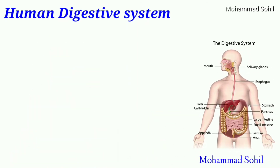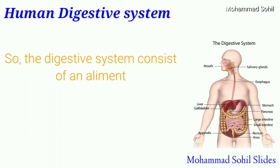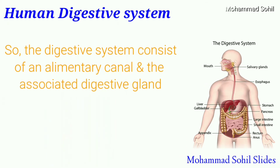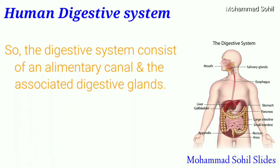In this video we are going to see what is meant by the digestive system and what are the different types of digestive glands present in it. The digestive system of human beings consists of an alimentary canal and the associated digestive glands.